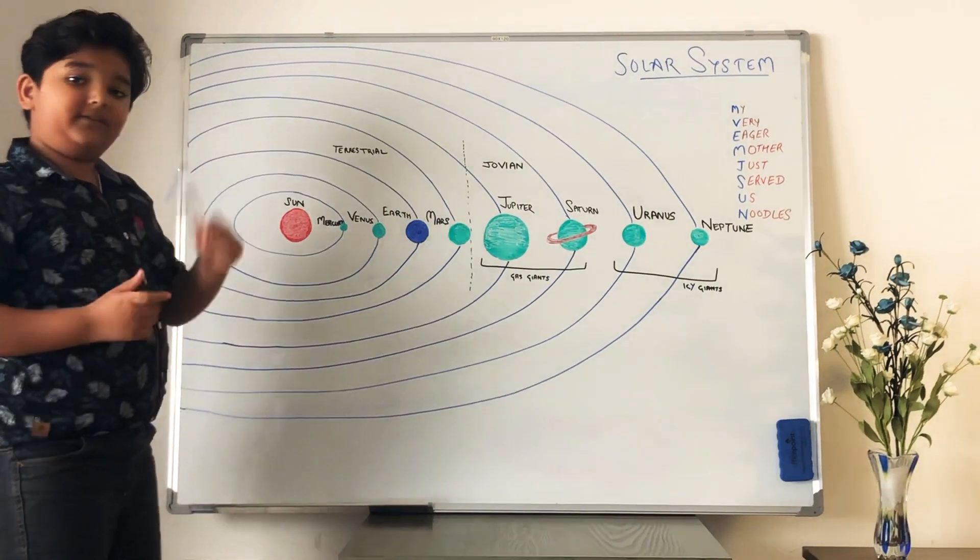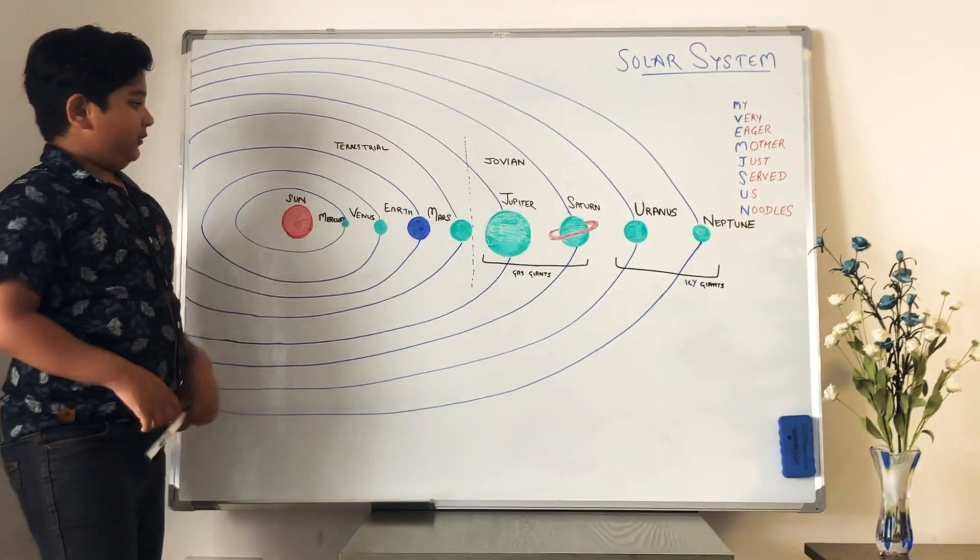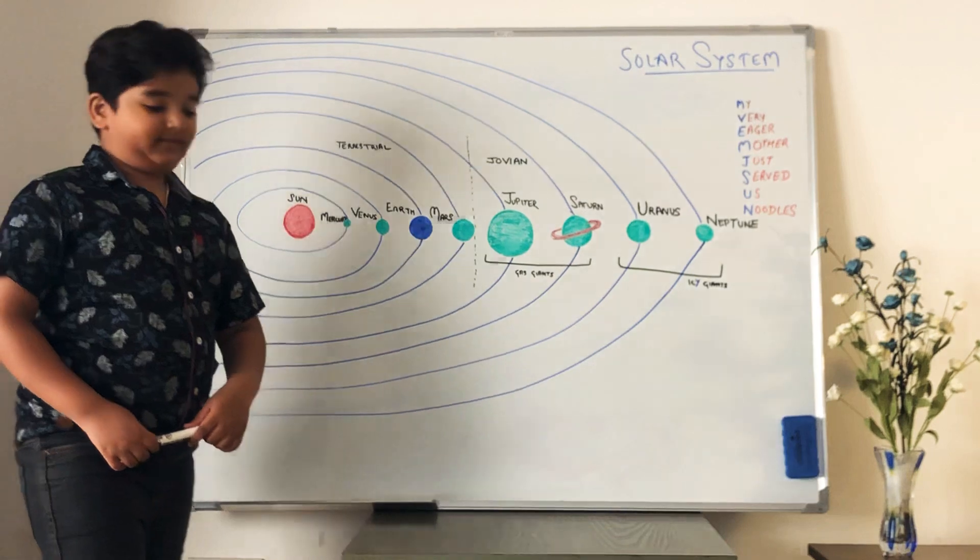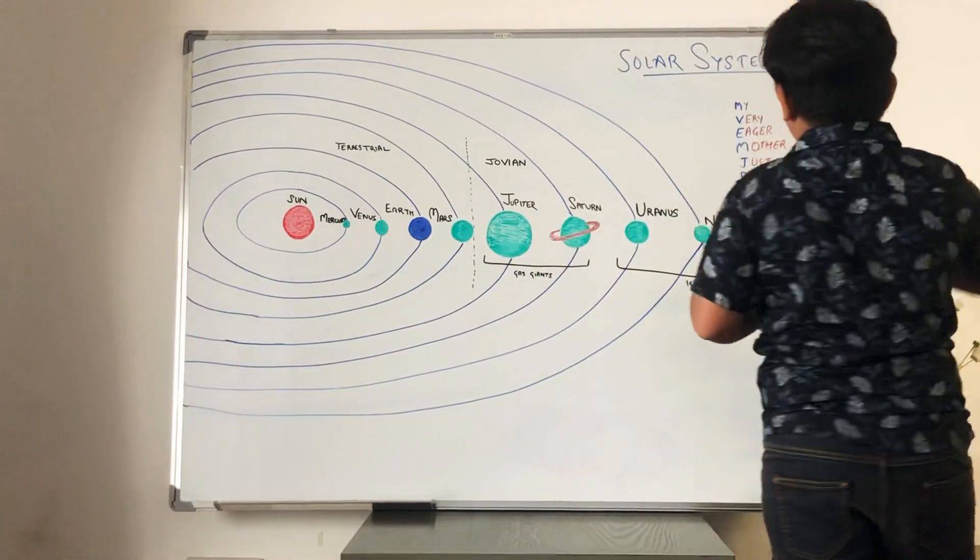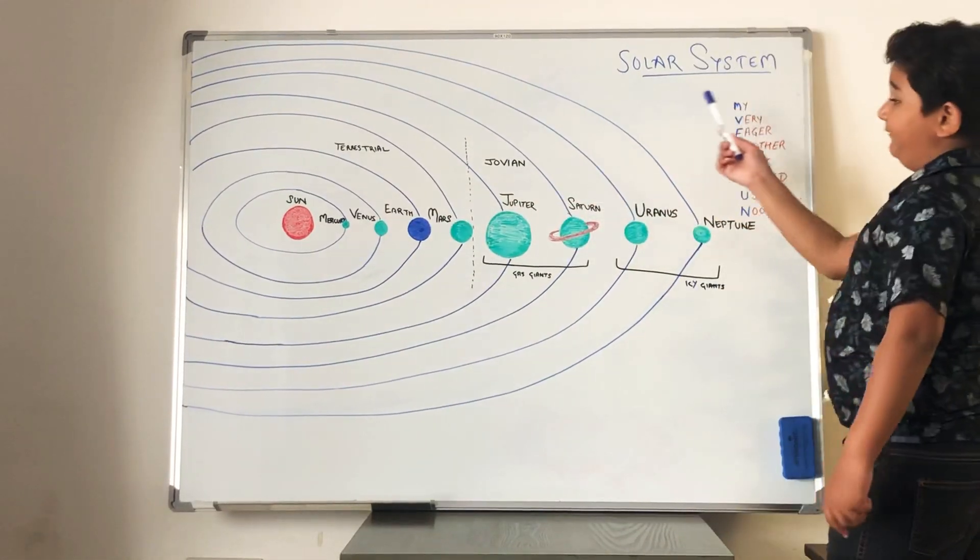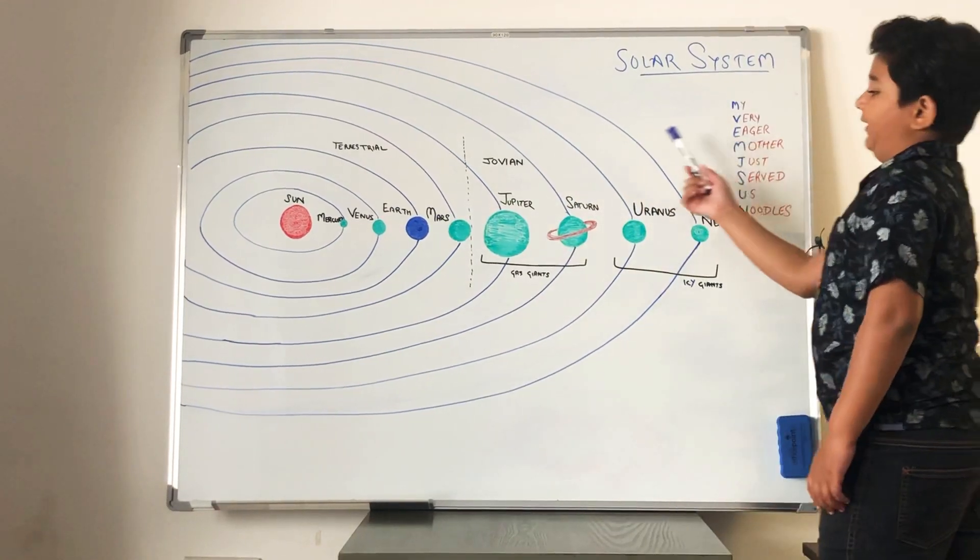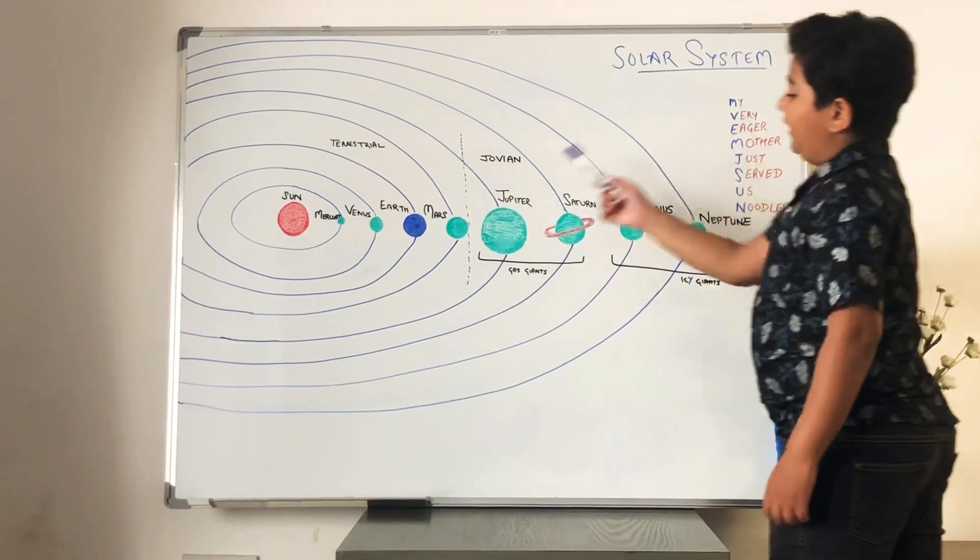And there is a very simple trick to remember all these planets. Look, M for Mercury, V for Venus, E for Earth, M for Mars,